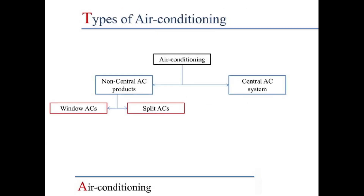Here is the chart — we can see that air conditioning is divided into two types: non-central AC products and central AC systems. First we will look at non-central AC products. These are further divided into two types: window AC and split AC systems.